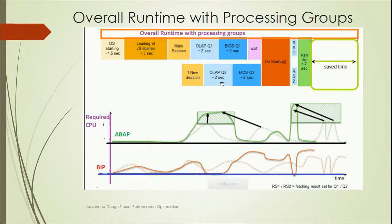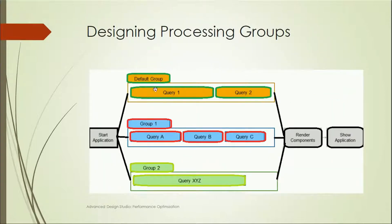With parallel processing and processing groups, a new session is created for the second data source group so queries execute simultaneously, saving significant time. Processing groups work by defining a default group and additional named groups (e.g., Group 1, Group 2). Within a group, queries run sequentially, but different groups run in parallel. This improves performance and ultimately leads to faster rendering and display of the application.